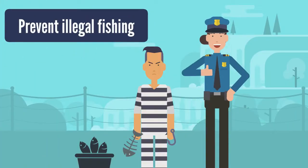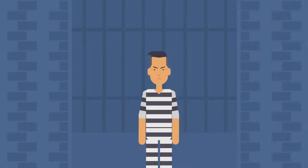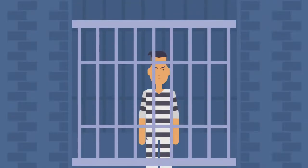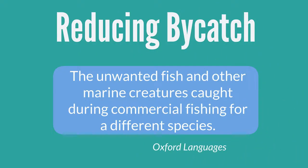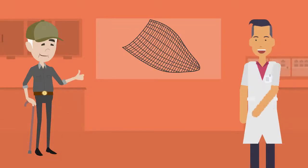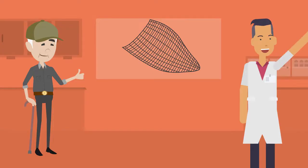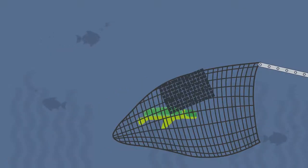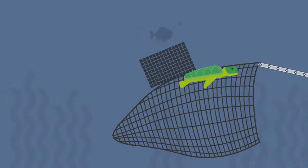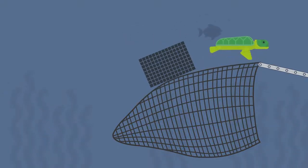Preventing illegal fishing would also greatly help to protect marine species. Reducing bycatch is another helpful step. Many fishermen are working to improve the design of fishing gear to decrease the risk of this. For example, turtle exclusion devices are fitted to trawl nets and open up if a turtle gets caught in them, allowing the turtle to escape.